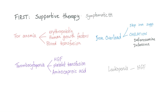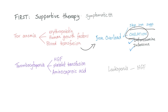First: supportive therapy. To treat anemia, give erythropoietin or human growth factors similar to EPO. If those fail, give blood transfusion — but blood transfusions risk iron overload, so stop iron supplements and perform iron chelation with drugs such as deferoxamine or deferasirox. Both of these drug names contain 'FE,' which is the symbol for iron.